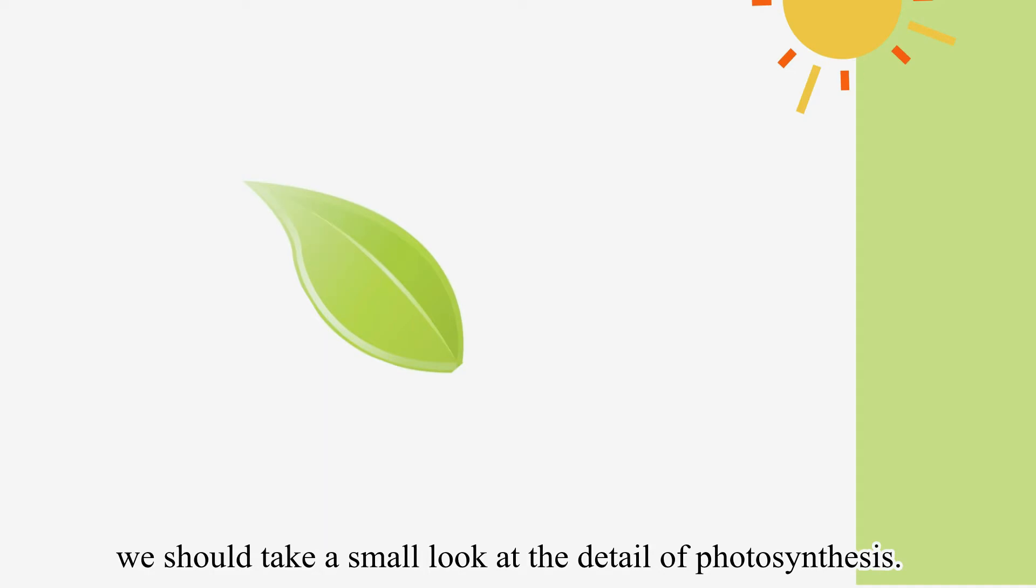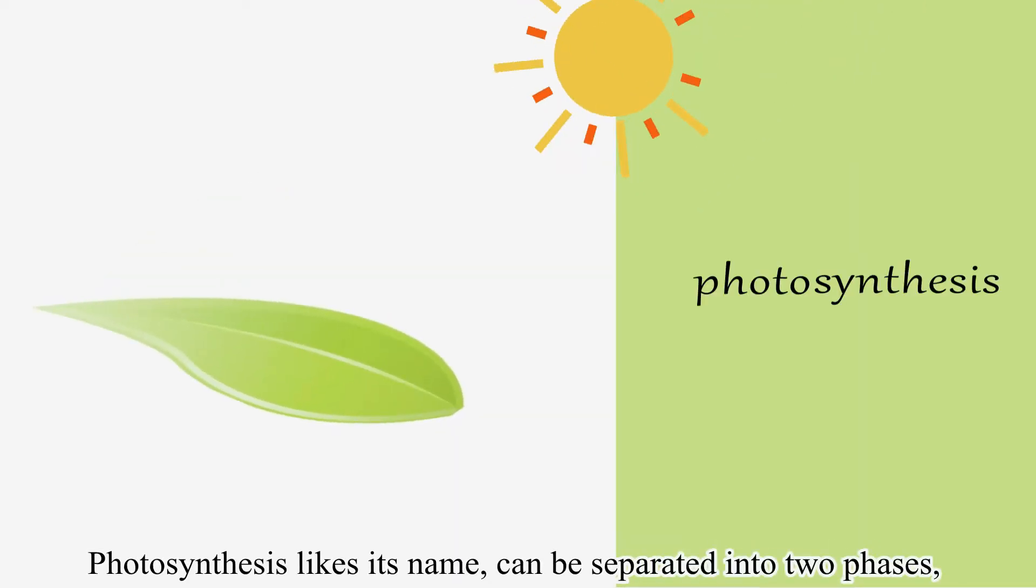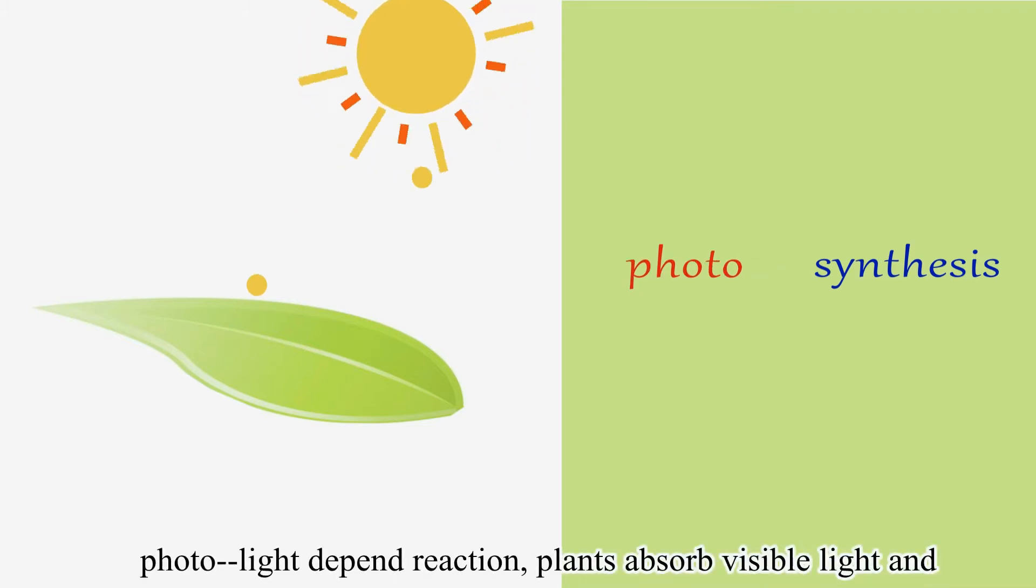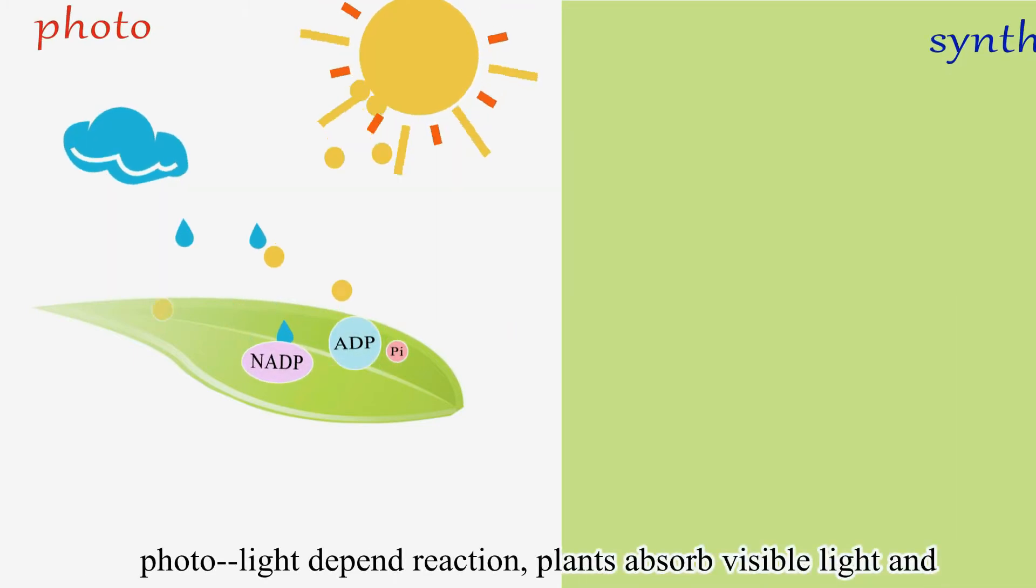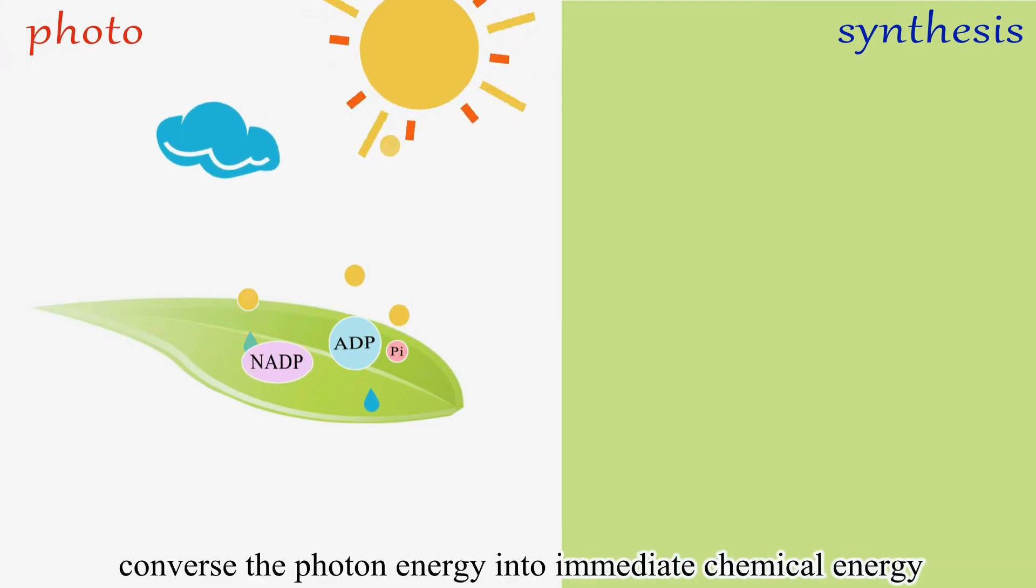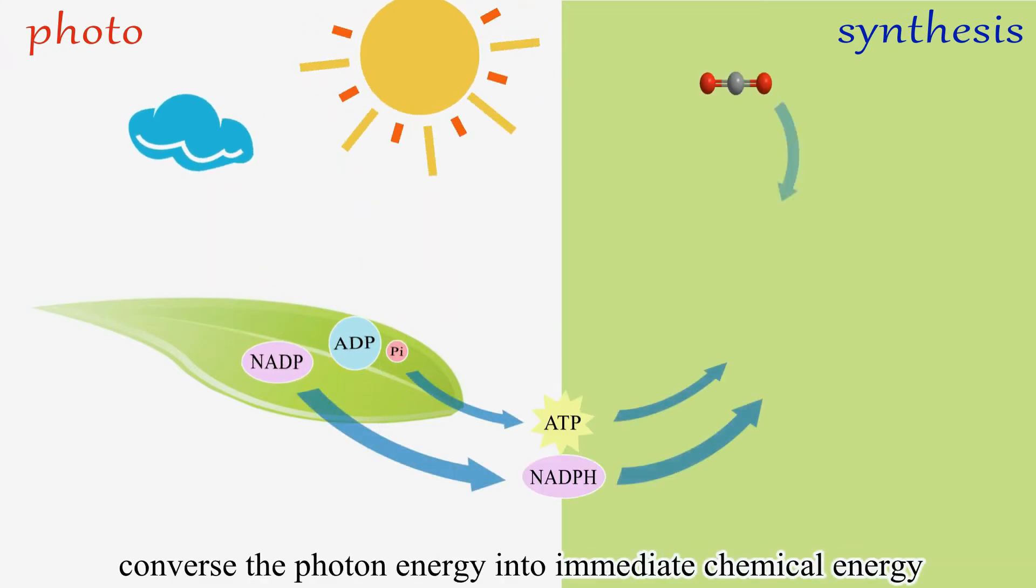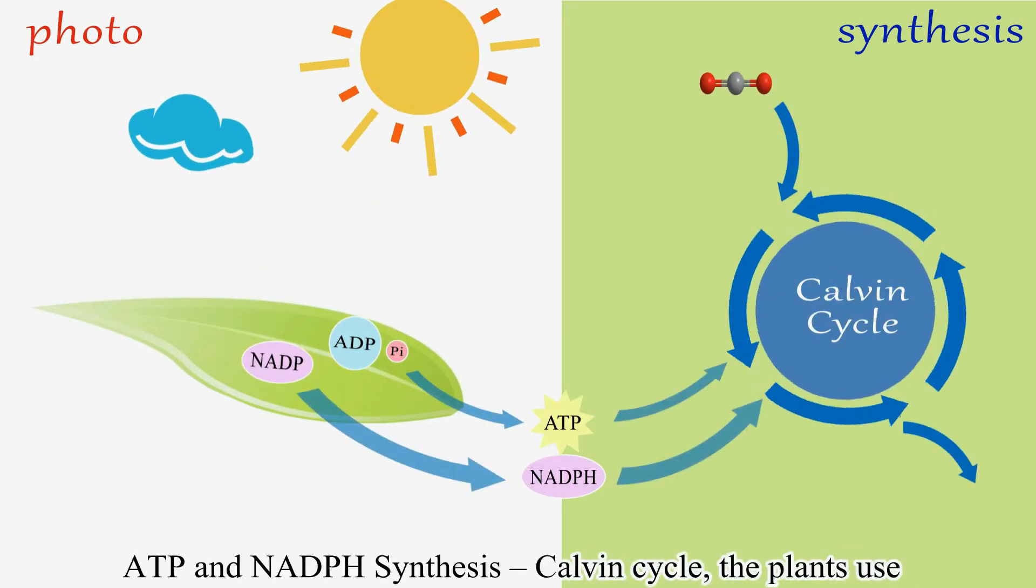Let's take a small look at the detail of photosynthesis. Photosynthesis, like its name, can be separated into two phases. Photo, the light-dependent reaction: plants absorb visible light and convert the photon energy into the immediate chemical energy ATP and NADPH synthesis.